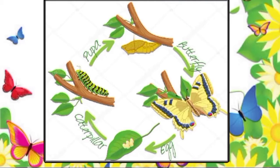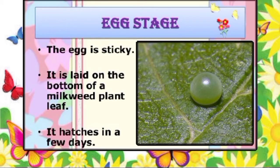Now let's understand the life cycle of a butterfly. Butterflies have four life stages: the egg, the larva (caterpillar), the pupa, and the adult butterfly. Each of the four stages is very unique to individual species of butterflies. The first stage is the egg stage, which usually lasts three to seven days, though this can vary among different species. The egg is sticky and is laid on the bottom of a milkweed plant leaf, and it hatches in a few days.